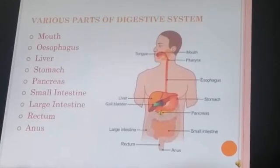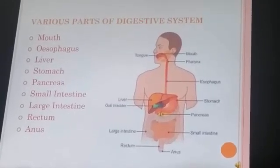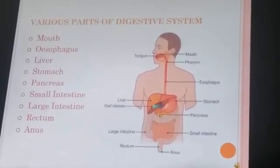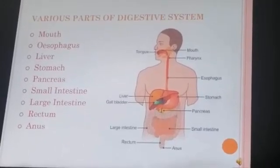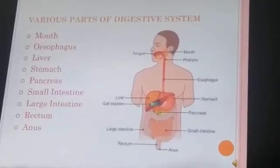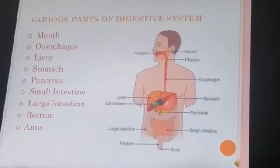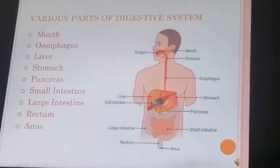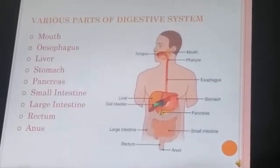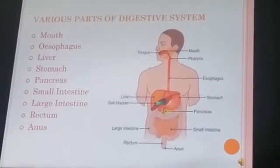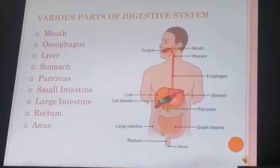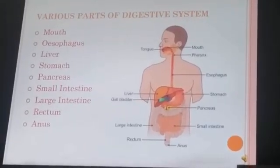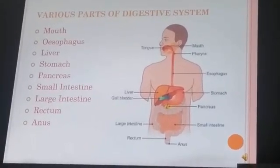The digestive system has these parts: mouth, esophagus (that is also known as food pipe), liver, stomach, pancreas, small intestine, large intestine, rectum, and anus. We will study these parts one by one in detail.